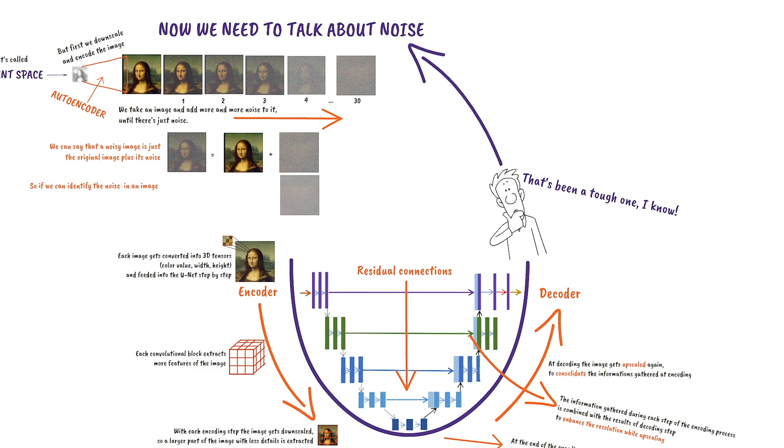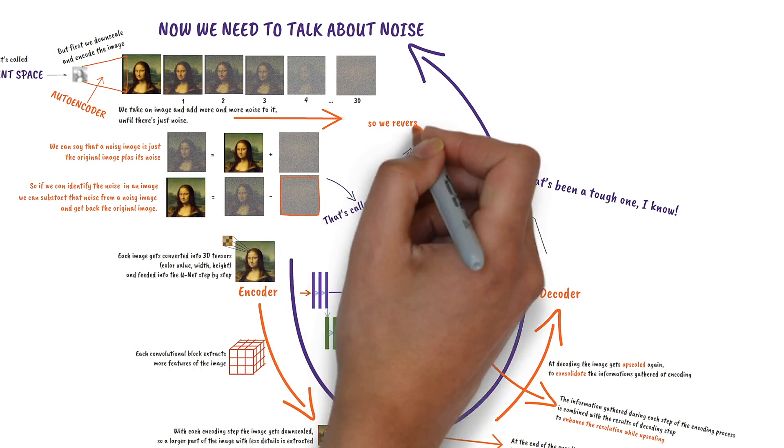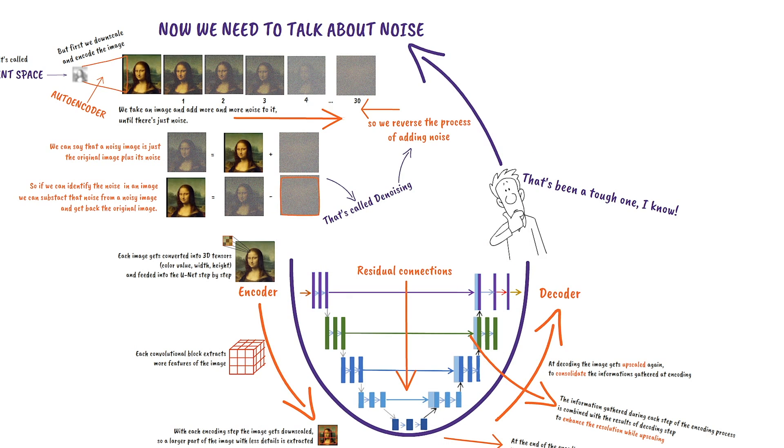So if we know the noise level, we can subtract it and get back the original image. That's called denoising. So the noising process is reversed and it's also fed into the U-Net.